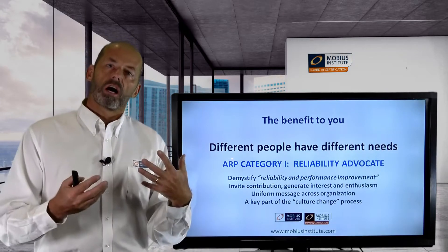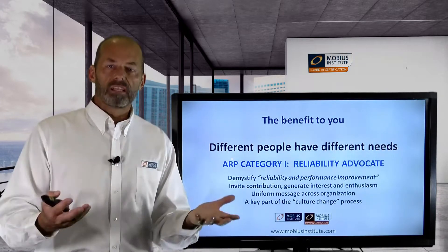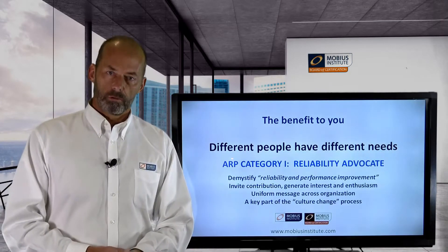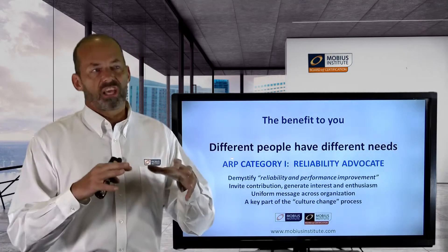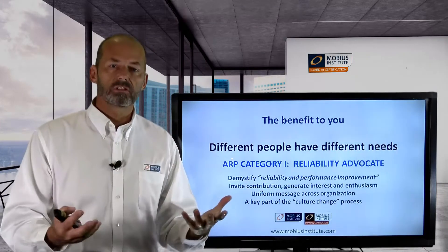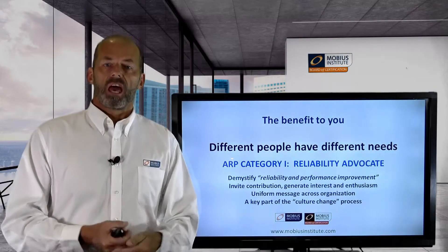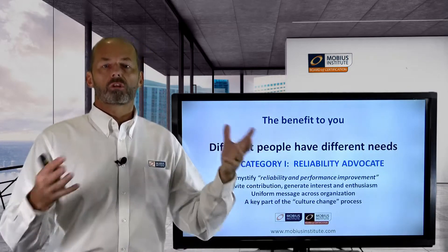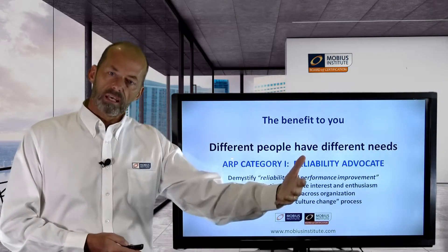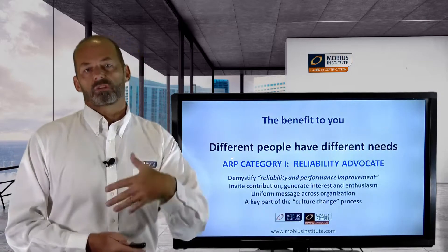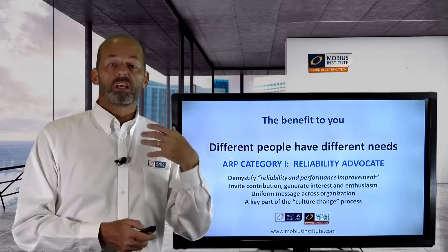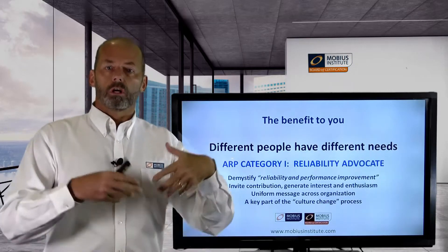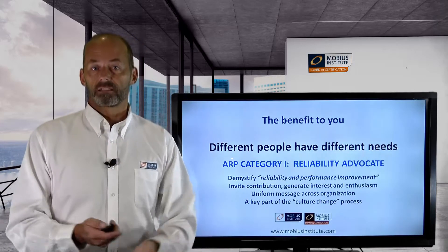Category 1 is designed for what we're calling the Reliability Advocate. We need everyone within the organisation to understand what reliability improvement is all about — understand the terminology, understand the philosophy, understand how they benefit from it — and put them in a position where they will support and contribute to the program. That's what the training has been designed for and what the exam will test. A person can receive recognition for the knowledge they have in that area, which is very important for the whole culture change process and the success of the program.